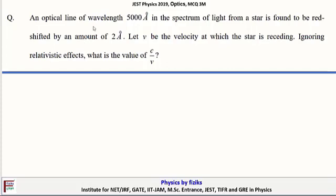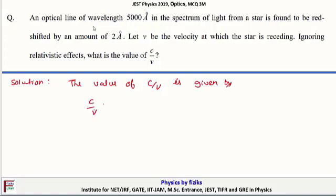Final problem: An optical line of wavelength 5000 Å in the spectrum of light from a star is found to be shifted by an amount of 2 Å. Let v be the velocity at which the star is receding. Ignoring relativistic effects, what is the value of c/v? The value of c/v = λ₀/Δλ = 5000/2 = 2500. Our answer is 2500.